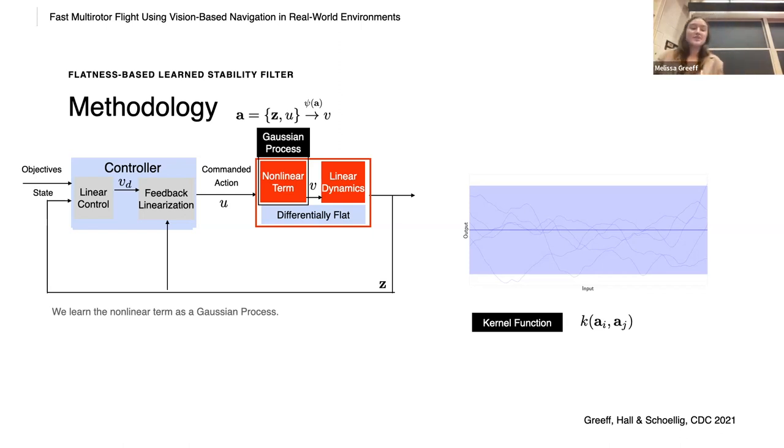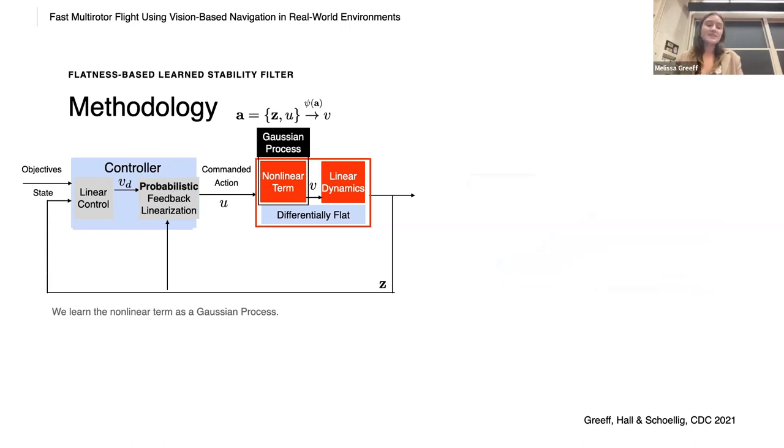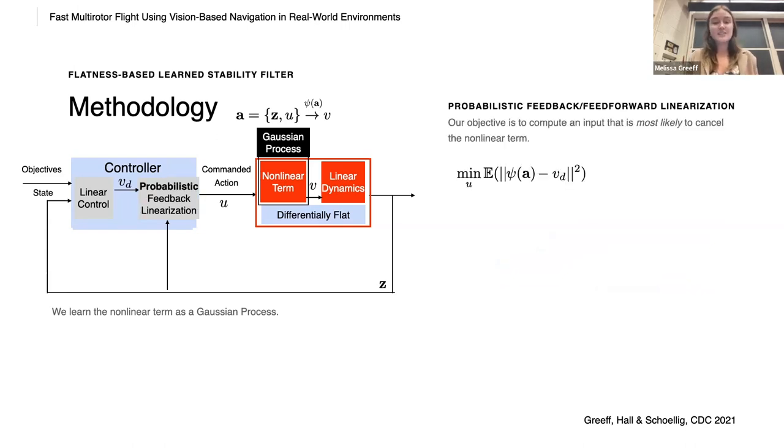And the value of a Gaussian process is that as we add data, the most likely function or mean function, as you can see highlighted by the line, changes. And so does the uncertainty around that data point. So you can see, as we add more data, how the mean function and uncertainty change around the areas where we have data.